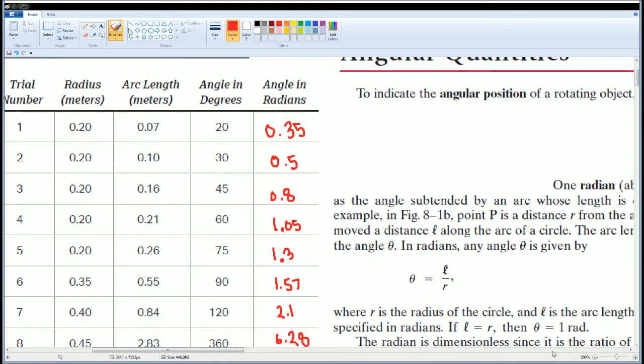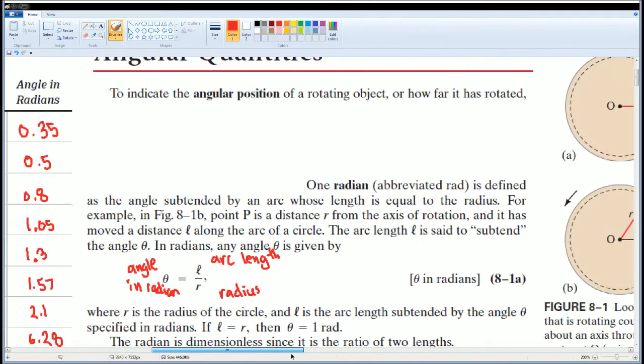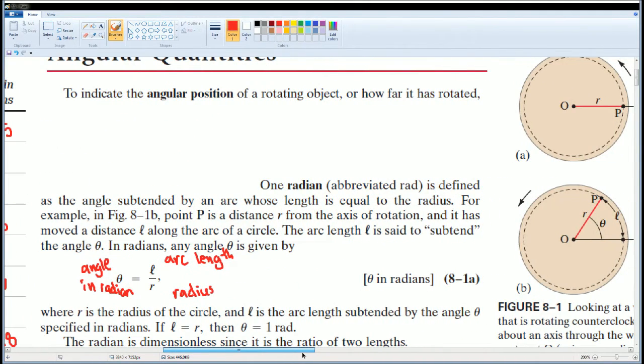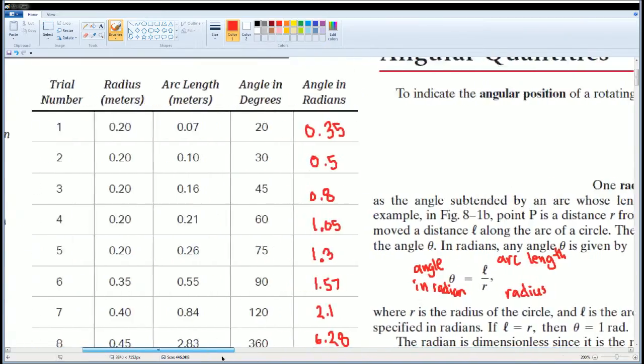Again, we are using this equation. If you need help, this is the angle in radians, this is the arc length, and this is the radius. If you'd like to know what it represents, this is what it means.